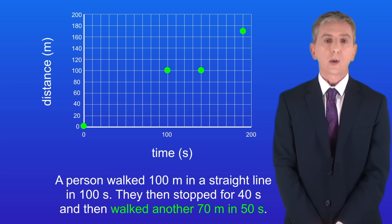In the last part of the journey the person walked another 70 meters in 50 seconds. So to show this we place a dot 70 meters further up the distance axis and 50 seconds further along the time axis like this. And finally we connect the dots with straight lines. So this is the distance-time graph for the journey.